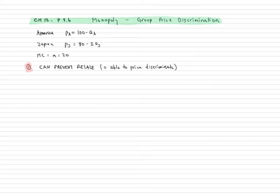America has this inverse demand function, Japan has this inverse demand function, and this is the monopolist marginal cost. The first question is, if the monopoly can prevent resale, that is, it's able to price discriminate, what will be the optimizing price, quantity, and profit in each of the two countries? The rule is, set marginal revenue equals marginal cost in each of the markets.